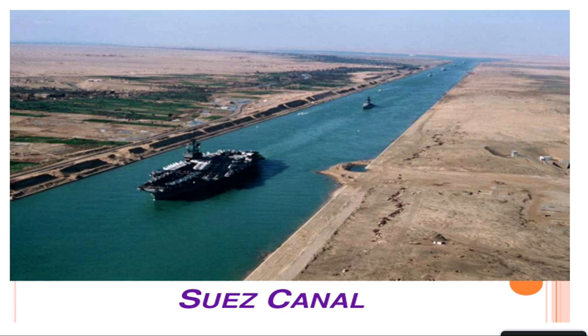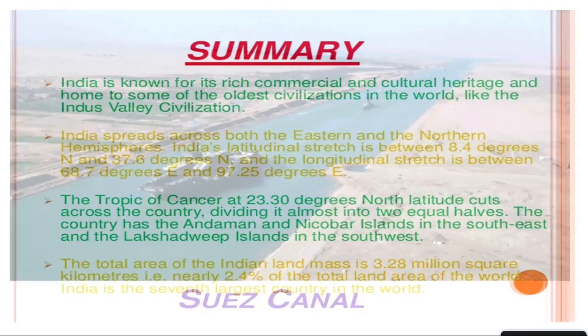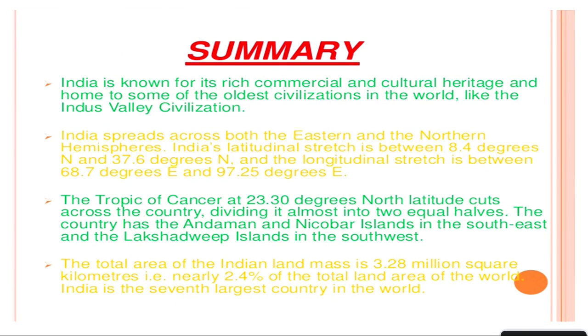To summarize this chapter: India is known for its rich commercial and cultural heritage and is home to some of the oldest civilizations in the world, like the Indus Valley Civilization. India spreads across the eastern and northern hemisphere. Its latitudinal stretch is between 8 degrees 4 minutes north and 37 degrees 6 minutes north, and we have covered both its latitudinal and longitudinal extent. It was a very interesting session with a lot of information about this chapter.